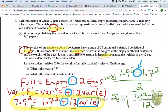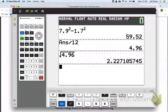Okay, so let's check out the calculator, calculate this value, we got 7.9 and 1.7. Alright, so in this first step of my calculator, 7.9 squared minus 1.7 squared, 59.52, take that answer and divide by 12, I get 4.96, that's the variance of one egg. And then square root that to get the standard deviation is 2.23.